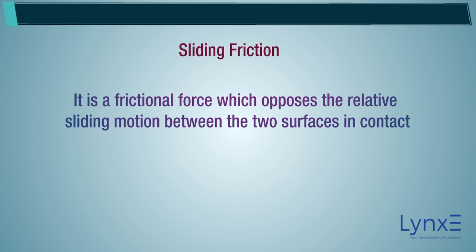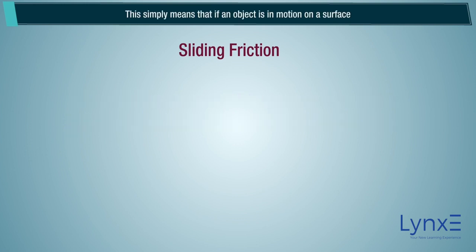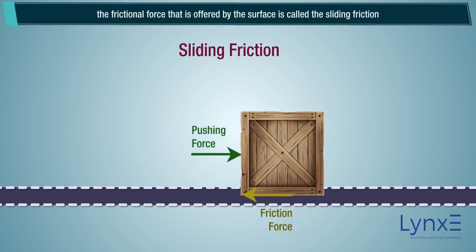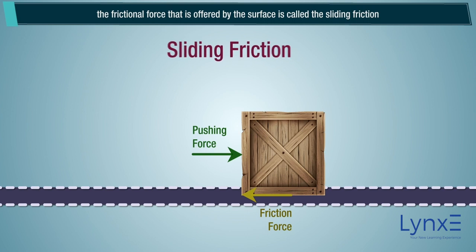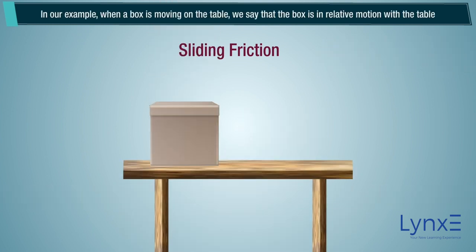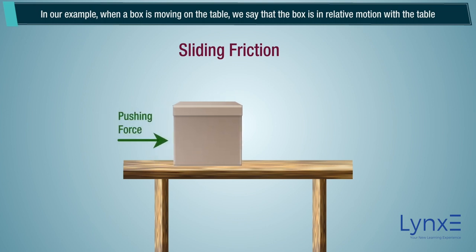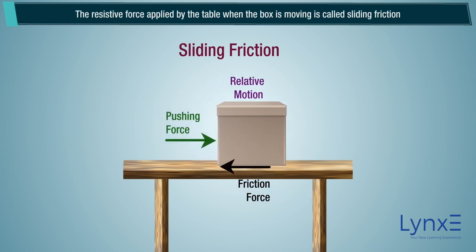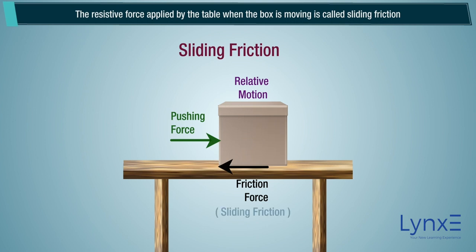Sliding friction is a frictional force which opposes the relative sliding motion between two surfaces in contact. This simply means that if an object is in motion on a surface, the frictional force offered by the surface is called sliding friction. The key point here is sliding motion — the two surfaces have to be in relative motion with each other. In our example, when a box is moving on the table, the resistive force applied by the table is called sliding friction.